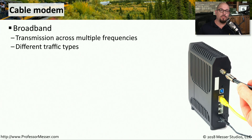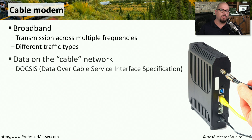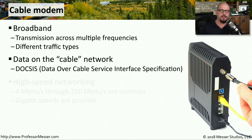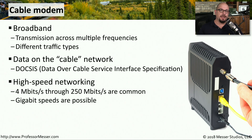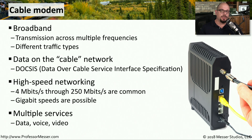A common network device on both home and corporate networks is the cable modem. These allow connection to a broadband network, usually provided by a cable television company, using a standard called DOCSIS — Data Over Cable Service Interface Specification. DOCSIS networks support many throughput levels, from slower networks at 4 megabits up to 250 megabits per second, and today it's not uncommon to see gigabit speeds. DOCSIS networks also support multiple services, including video, internet data, and voice telephone communication.